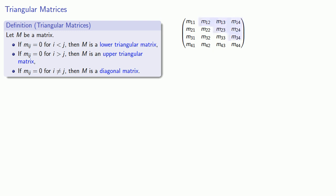And that means all of these entries are going to be 0 and our matrix looks like this, where the only non-zero entries are in this lower triangle.